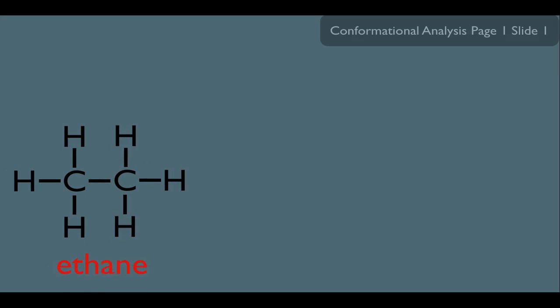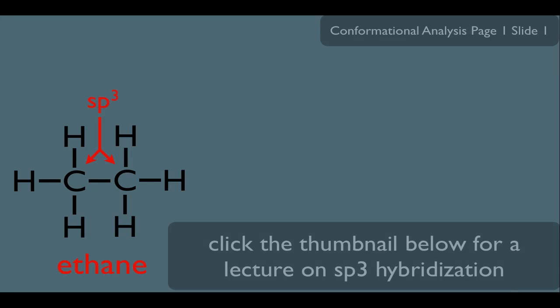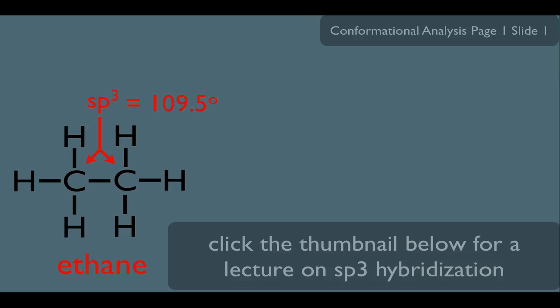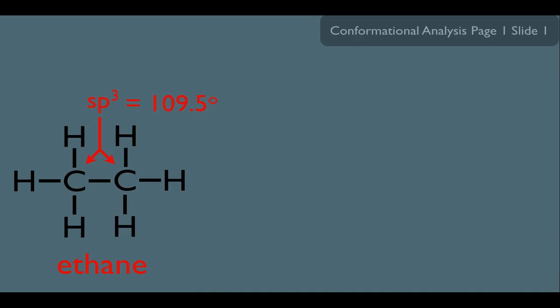Here's the first principle I'd like you to know. Let's consider this molecule right here, ethane. If you were to determine the hybridizations of the two carbons in this molecule, you would find that they're both sp3 hybridized. Which means their bond angles are 109.5 degrees. So what you see here in front of you is not the actual geometry of the molecule. The first thing I want to show you is how to represent the molecule in a more realistic way.